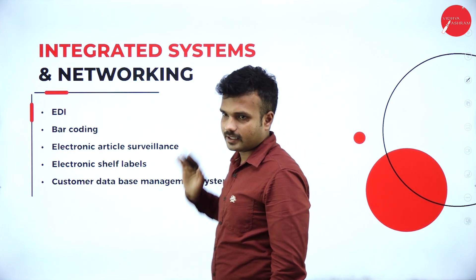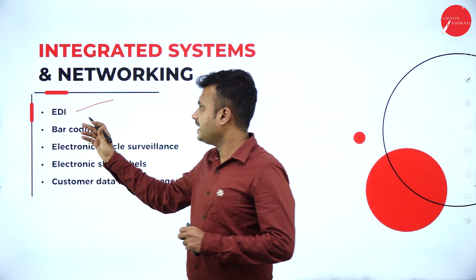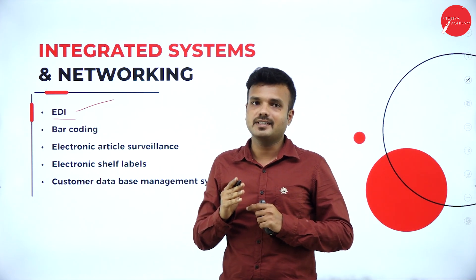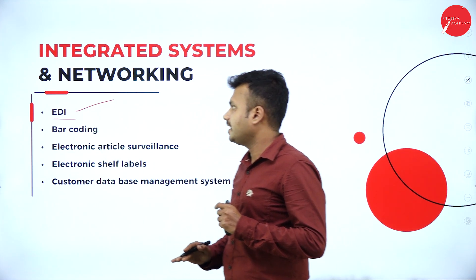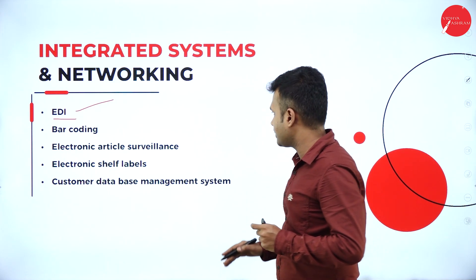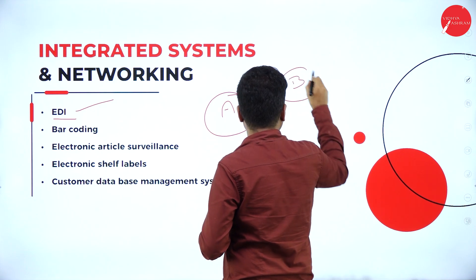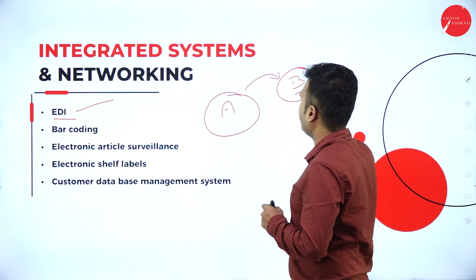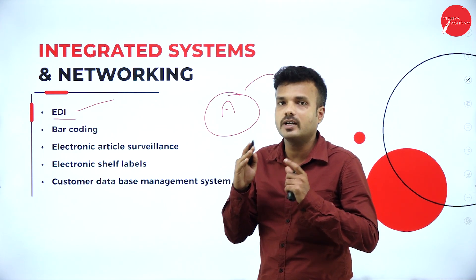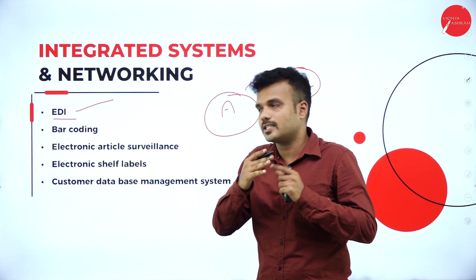Integrated systems and networking — under this we study EDI, Electronic Data Interchange. It exchanges data from one business to another business in electronic format. For example, company A is located in India and its affiliate B is located in America; whatever documents are maintained in America must be communicated to India through EDI. It sends information in digitalized format only, from business to business — transferring data in digital format from one business to another.